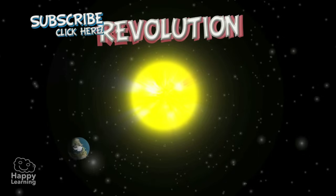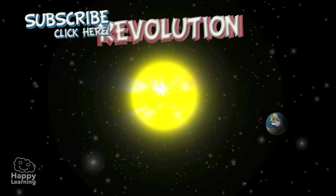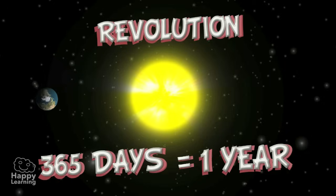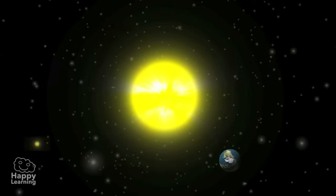And there is revolution, which is the Earth traveling around the Sun, which takes 365 days and causes the seasons.